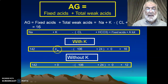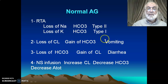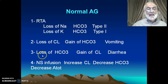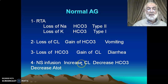Again, the anion gap equals fixed acids plus total weak acids — 16 if we add potassium, 12 if we do not. Now let's discuss normal anion gap. Normal anion gap may occur in renal tubular acidosis with loss of sodium bicarbonate or potassium bicarbonate, in vomiting with loss of chloride and gain of bicarbonate, in diarrhea, or with infusion of normal saline.